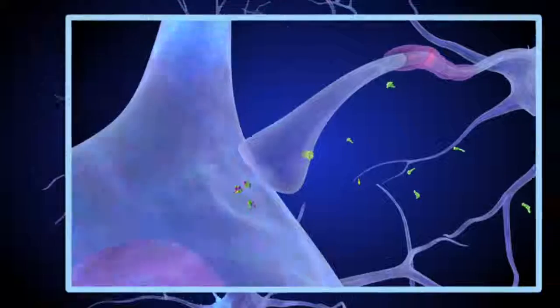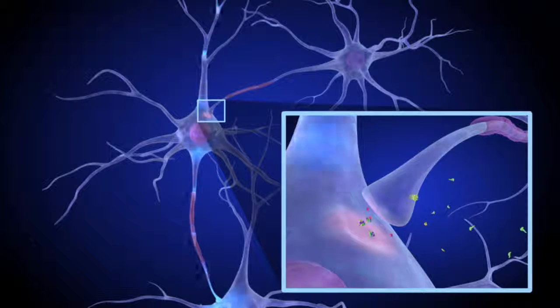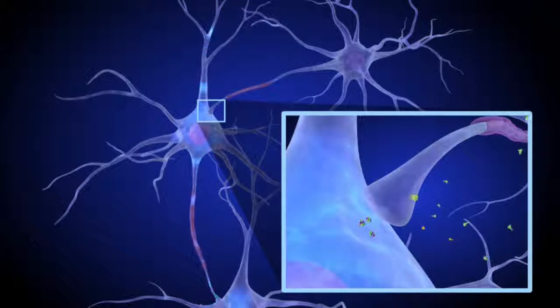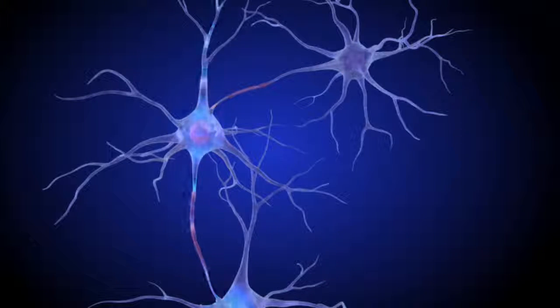Among other effects, THC reduces the release of GABA in the striatum. This reduction in turn causes nearby dopamine neurons to release more dopamine. Increased dopamine release produces the positive feelings of the marijuana high.